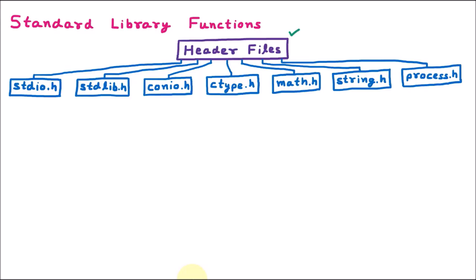The first header file is stdio.h, where .h stands for header file. The next one is stdlib.h, then conio.h, ctype.h, math.h, string.h, and process.h.